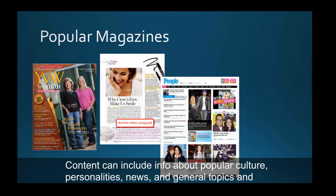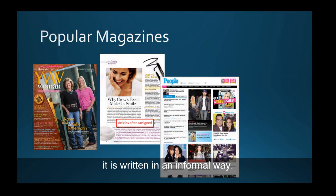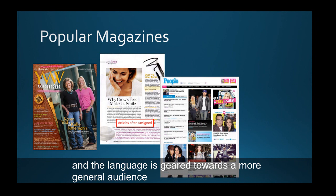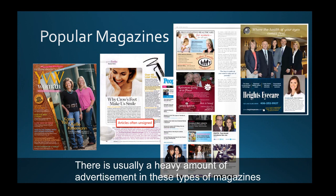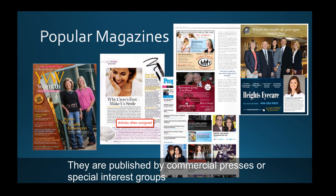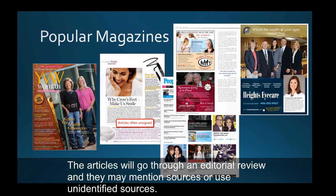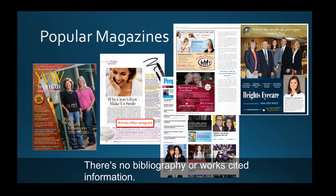Content can include information about popular culture, personalities, news, and general topics, and it's written in an informal way. It does not usually include primary research, and the language is geared towards a more general audience. There's usually a heavy amount of advertising in these types of magazines. They're published by commercial presses or special interest groups. The articles go through an editorial review, and they may mention sources or use unidentified sources. There is no bibliography or works cited information.